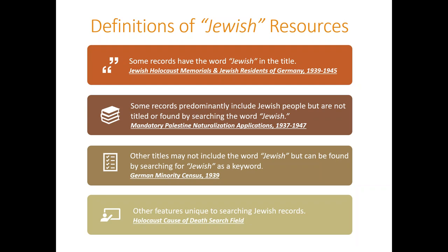For the purpose of this lecture, let's define Jewish resources in a few ways. Some records have the word Jewish in the title, such as the collection Jewish Holocaust memorials and Jewish residents of Germany 1939 to 1945. Some records, however, you need to search with a keyword rather than in the title of the collection field. An example would be the mandatory Palestine naturalization applications 1937 to 1947. There are other titles that may not include Jewish in either the title or as a keyword — actually the German minority census will have Jewish as a keyword, but mandatory Palestine naturalization applications won't.